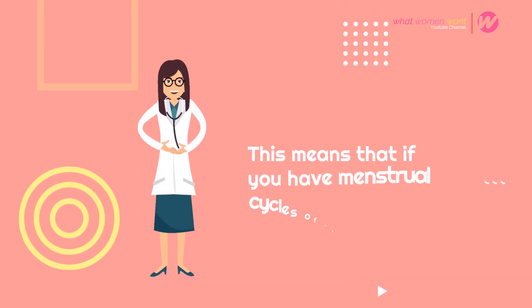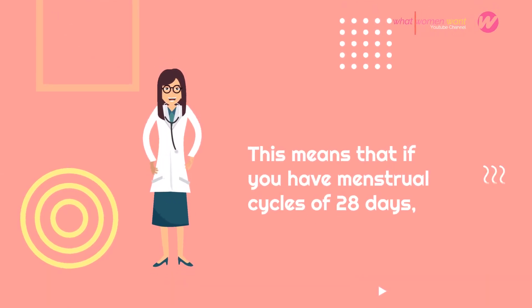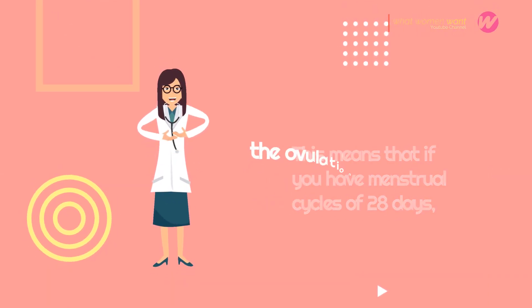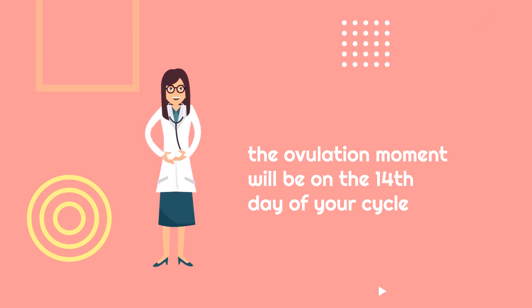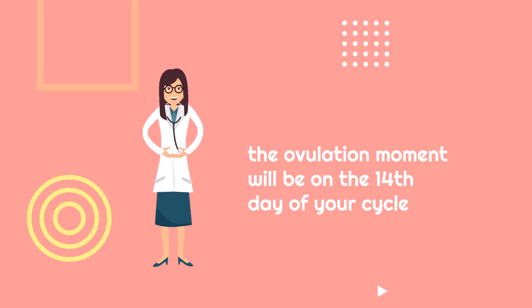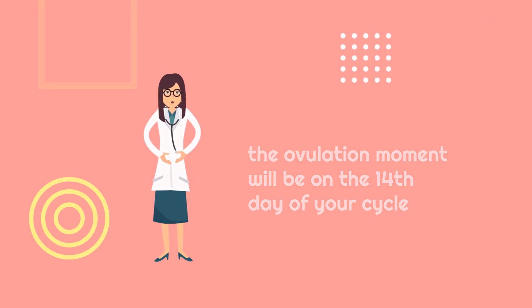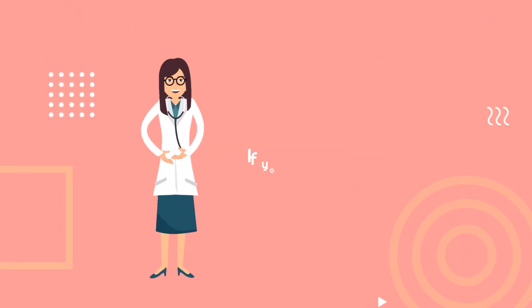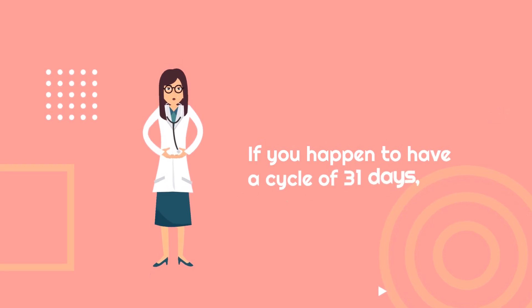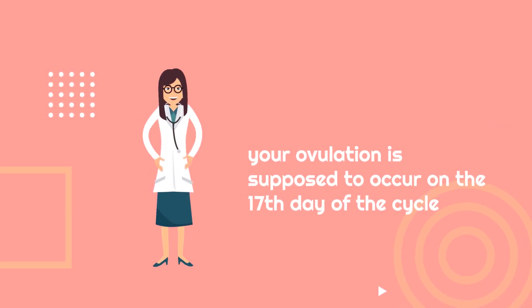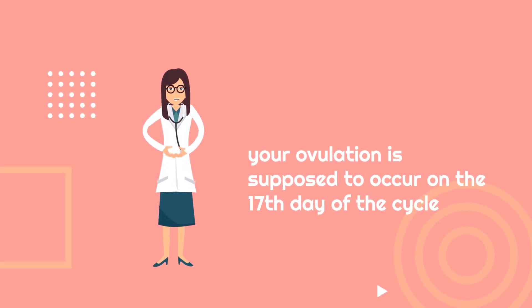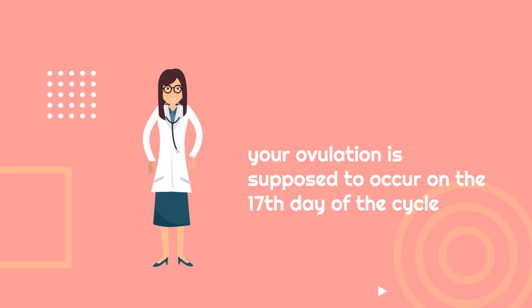This means that if you have menstrual cycles of 28 days, the ovulation moment will be on the 14th day of your cycle. If you happen to have a cycle of 31 days, your ovulation is supposed to occur on the 17th day of the cycle.